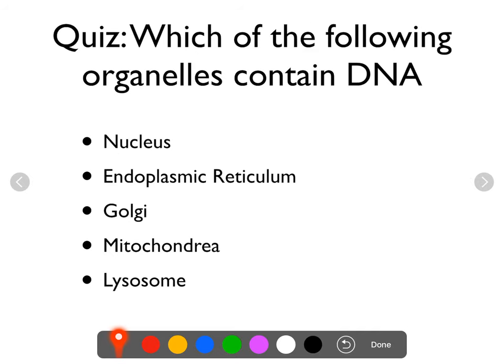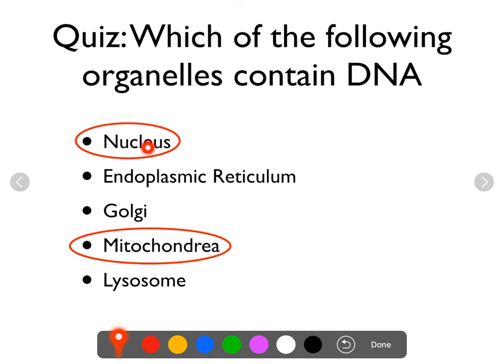Here's a quiz: which of the following organelles contain DNA? The nucleus definitely contains DNA, and the mitochondria contains DNA. The endoplasmic reticulum, Golgi, and lysosome do not. I'm going to end this video here and pick up with the second half later on.